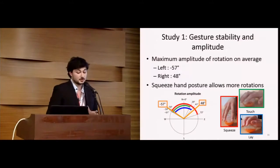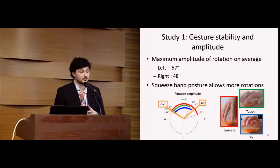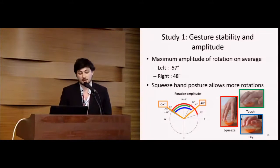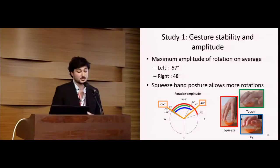We found no difference concerning the rotation between the two versions of the Roly-Poly mouse, but we found a difference between the left and right rotation. We think it's due to the wrist biomechanical limitation. We also found that the squeeze hand posture allows for larger rotations to the right than the two others. It's pretty important because hand postures have an impact on the capabilities of the device.